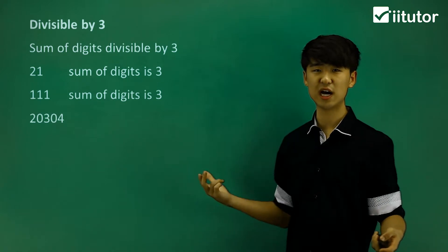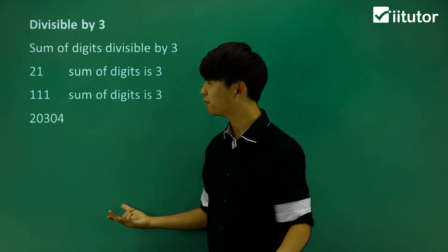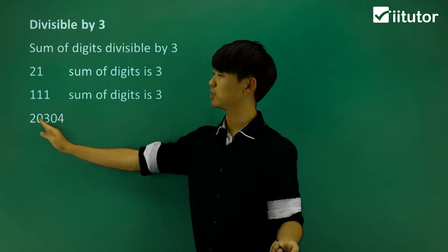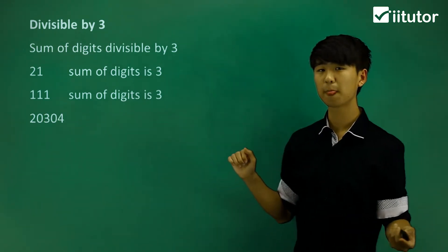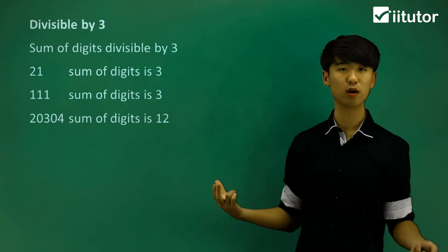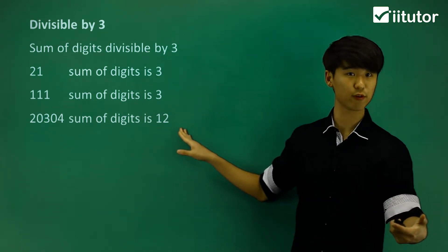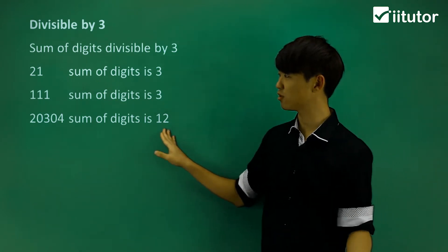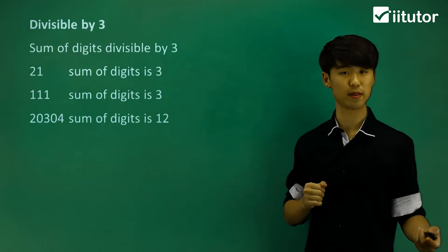A bit of a larger example: 20,304. Looking at the sum of digits here, so 2 plus 0 plus 3 plus 0 plus 4 gives us a sum of digits equal to 12. And we know that 12 is also divisible by 3. So since the sum of digits is divisible by 3, then our actual number here is also divisible by 3.